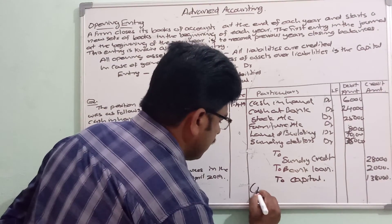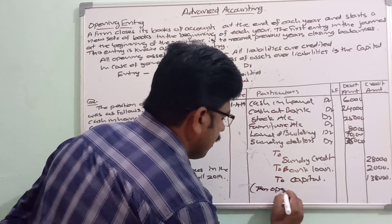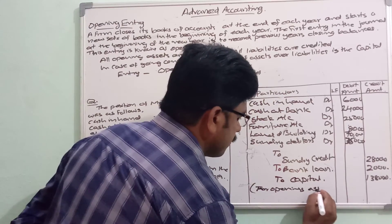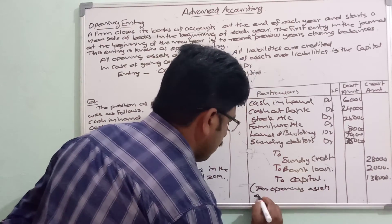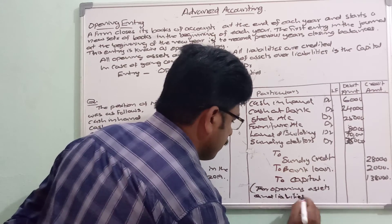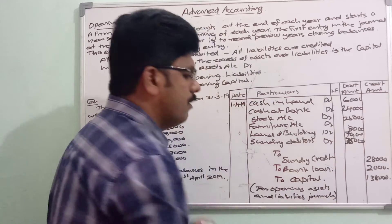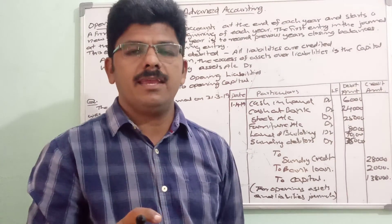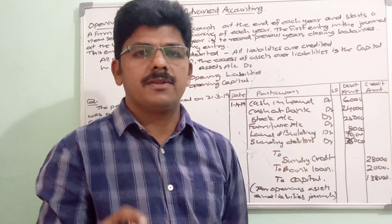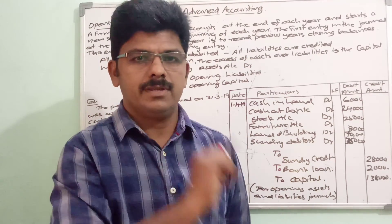Narration: journal entry for recording opening assets and liabilities. Opening assets and liabilities journalized. This entry is now complete. Opening entry — it is passed in the journal.